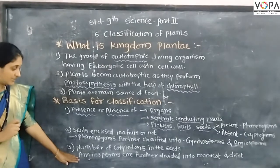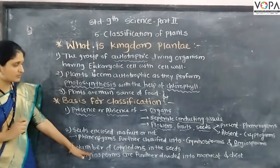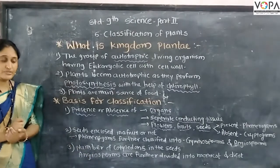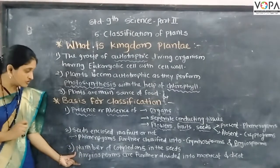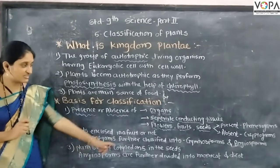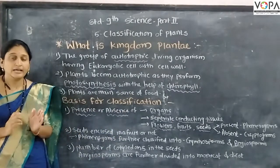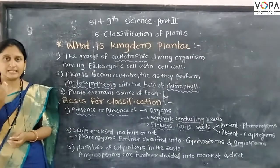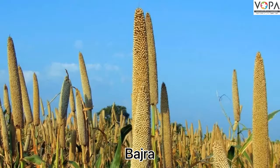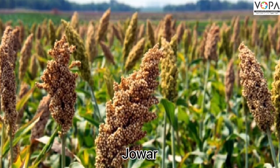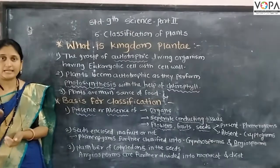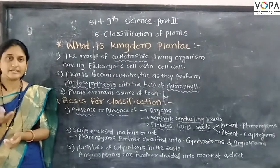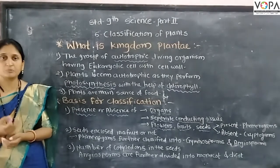This group is called angiosperms, divided by the number of cotyledons into two classes. These are monocots and dicots. Monocots are the main base group. Dicots are supposed to have different characteristics and are used accordingly.